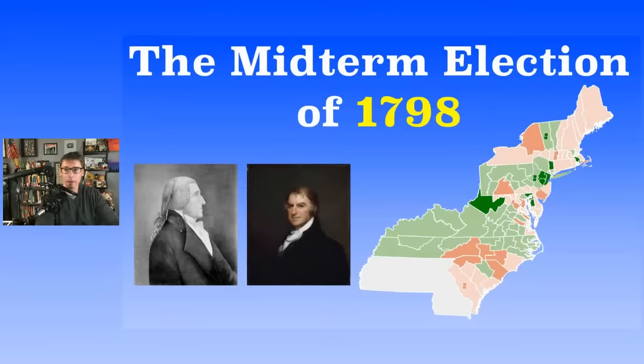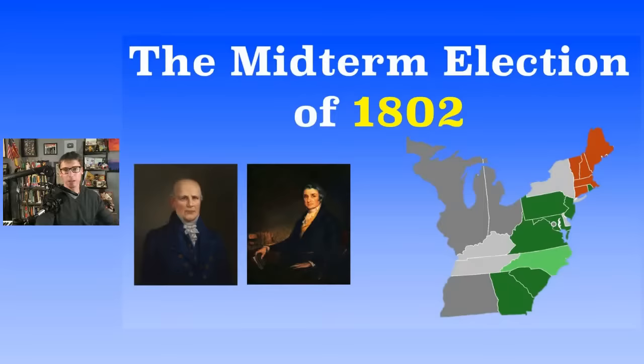We're going to jump ahead to the midterm election of 1802. I found maps on Wikipedia for some of these. For 1802, the president pro tempore on the right is Abraham Baldwin, and the Speaker of the House is Nathaniel Macon — Macon was a pretty big deal, one of the founding fathers.